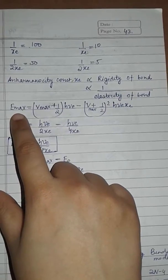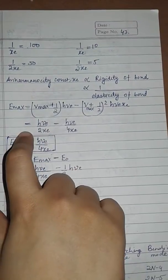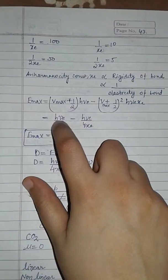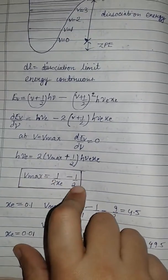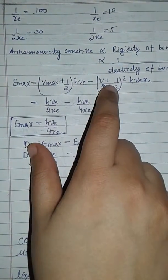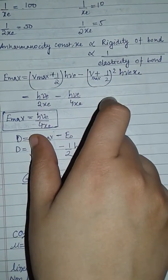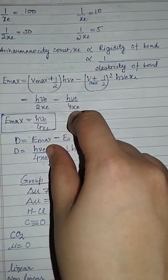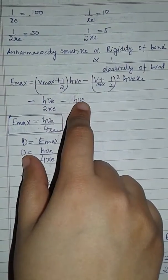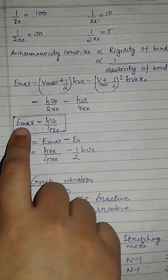E_max = (V_max + 1/2)hν_e minus (V_max + 1/2)² hν_e X_e. Since V_max + 1/2 = 1/(2X_e), substituting: E_max = [1/(2X_e)]hν_e minus [1/(2X_e)]² hν_e X_e = hν_e/(2X_e) minus hν_e/(4X_e). Taking the difference gives E_max = hν_e/(4X_e).